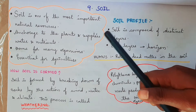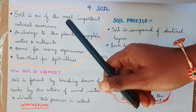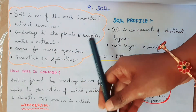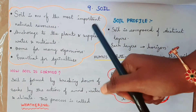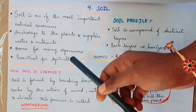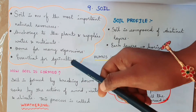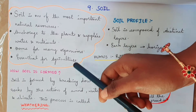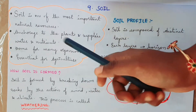Soil is one of the most important natural resources. Soil helps other plants and nutrients. Soil has a lot of organisms to help in the soil. Soil is essential for agriculture — not only for crops. These are some of the uses of soil.